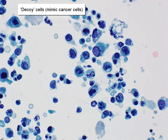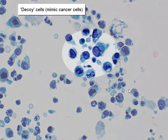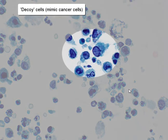Here is another field where again you can see these decoy cells with the round nuclei, the ground glass nuclear inclusions, and the marginated chromatin.